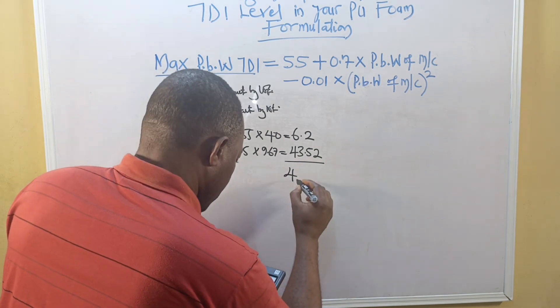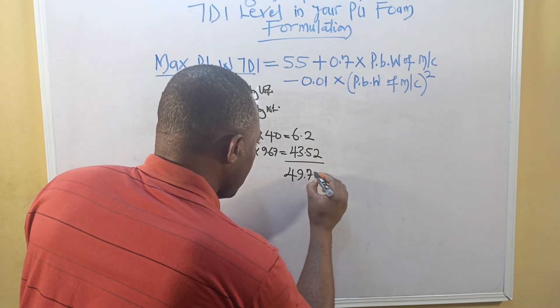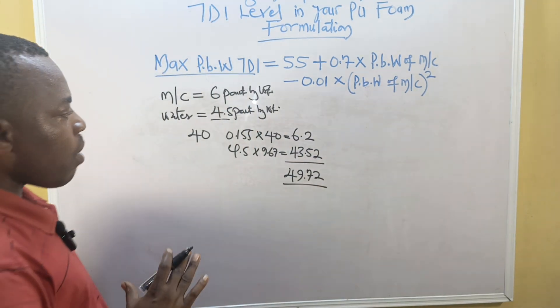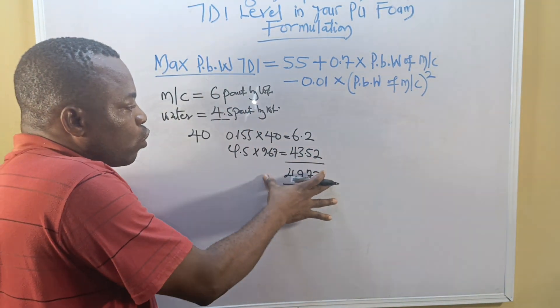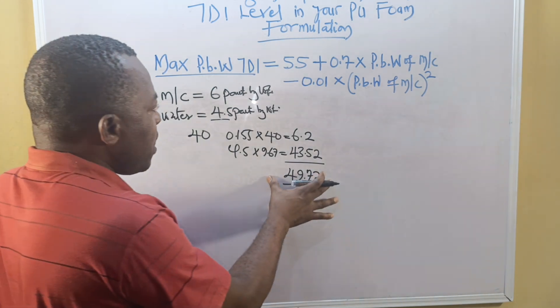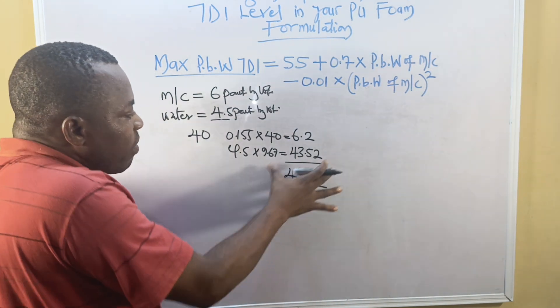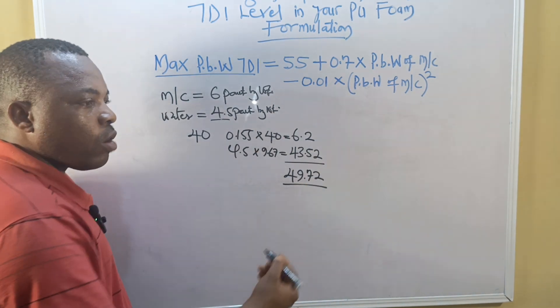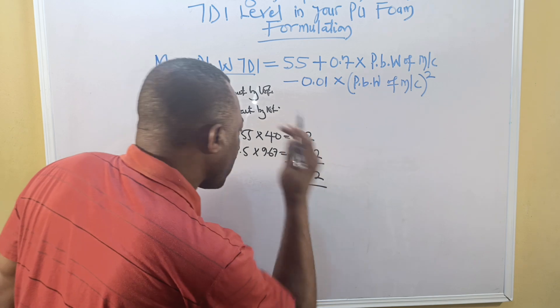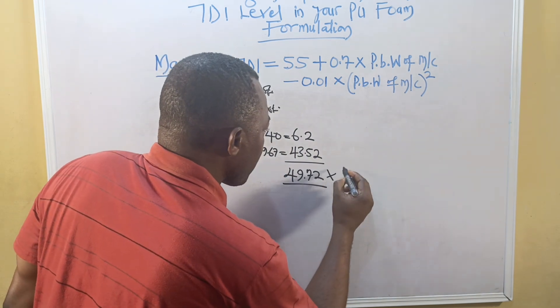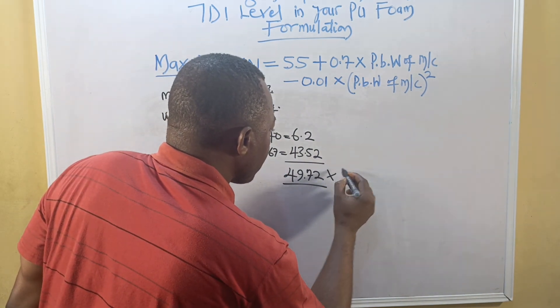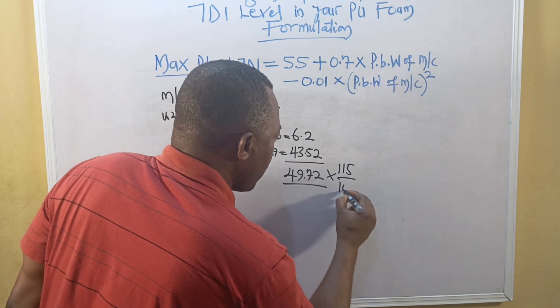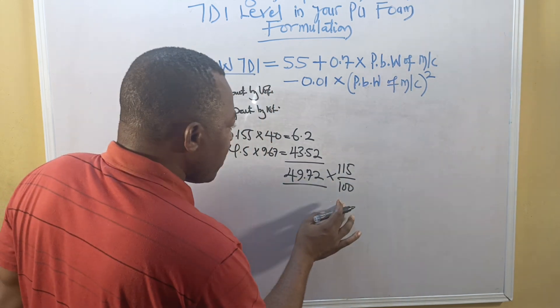Let me work this out: 0.155 times 40 gives us 6.2. Then 4.5 times 9.67 gives us 43.52 approximately. We add these up: 43.52 plus 6.2 equals 49.72 approximately. This is the TDI equivalent to 100 index.